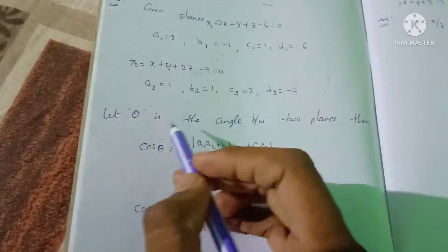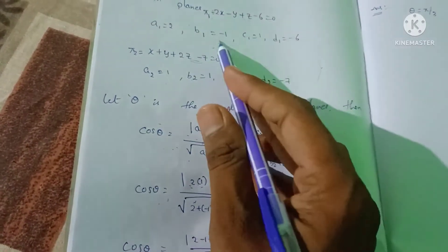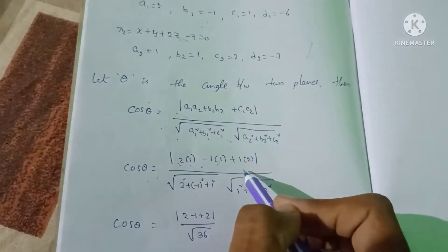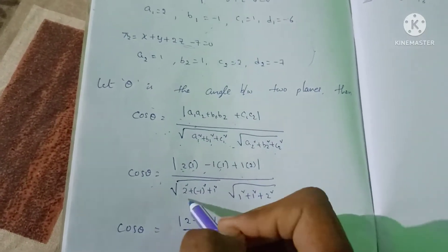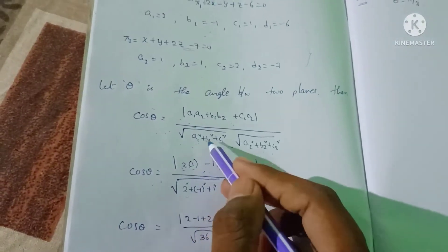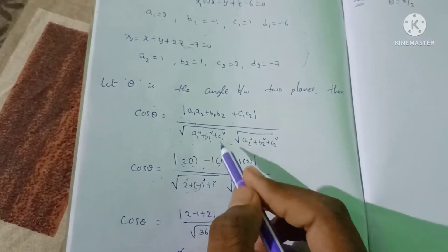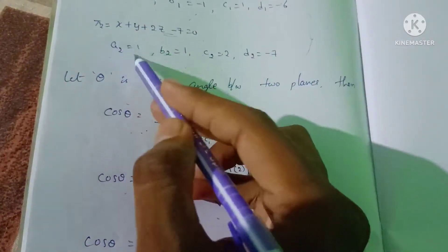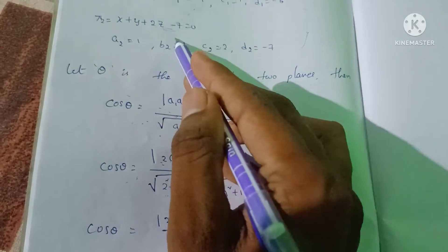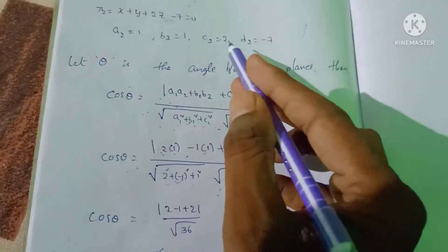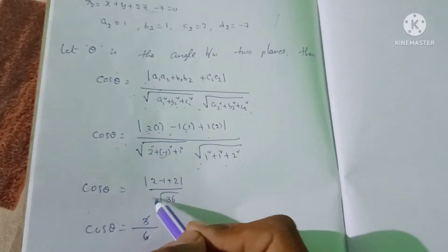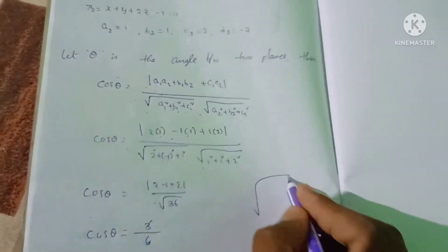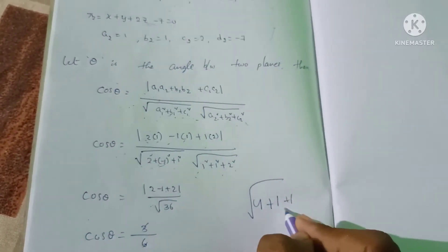Substituting: a1 = 2, b1 = -1, c1 = 1 and a2 = 1, b2 = 1, c2 = 2. So cos θ = |2·1 + (-1)·1 + 1·2| divided by √(2² + (-1)² + 1²) · √(1² + 1² + 2²), which equals |2 - 1 + 2| divided by √(4 + 1 + 1) · √(1 + 1 + 4).